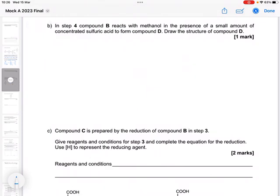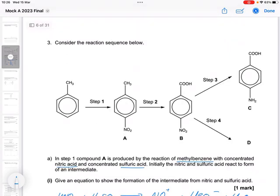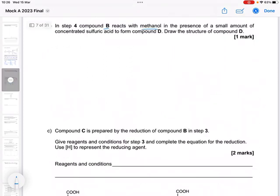In step four, compound B reacts with methanol. So let me go back to that. So step four, so B reacts with methanol. So that's an alcohol, and that's going to react with the carboxylic acid up here. In the presence of a small amount of sulfuric acid, that's the catalyst or the structure of the compound.